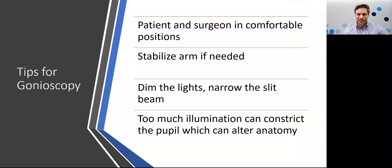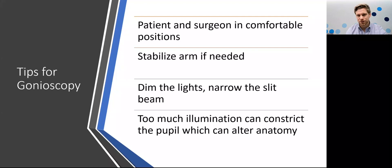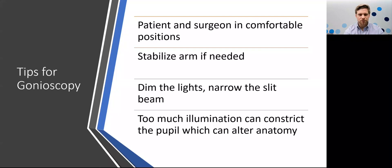Tips for gonioscopy in general: make sure you and the patient are both very comfortable. If the patient is moving back and forth, you're going to constantly break that air-to-tear interface. Stabilize your arms — use tissue boxes, lens cases, or books to support your arm, especially when you're first learning. That carries over to utilizing lasers as well. Dim the lights and narrow the slit beam — you don't want to inadvertently constrict the pupil, which can lead to a misdiagnosis of angle closure or narrow-angle glaucoma. Too much illumination can alter the anatomy.